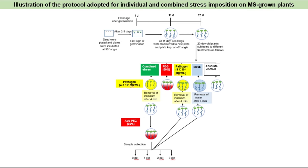For the MS-media methodology, Arabidopsis seeds were plated on MS plates placed at 90 degrees for vertical root growth. At 11 days post-germination, seedlings were transferred to new MS plates placed horizontally at 8 degrees for proper shoot growth. At 23 days post-germination, MS-grown plants were subjected to different treatments. For pathogen treatment, plants were exposed to pathogen by flood-inoculation for 4 minutes, with 60% pathogen solution added so that only the root part made contact. For combined stress, plants were first exposed to pathogen by flood-inoculation, then drought was imposed, and leaf samples were collected at 0, 1, 2, and 3 days post-treatment.